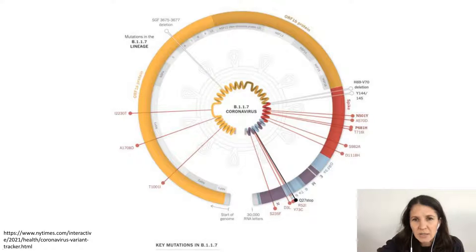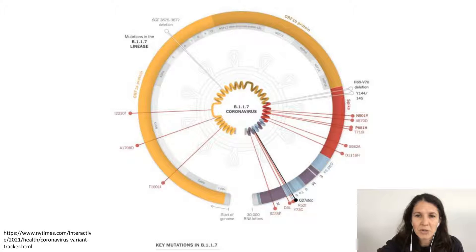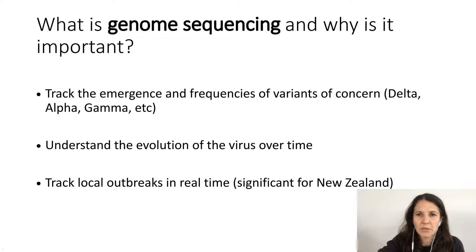There are also some deletions shown here as well. You can see that changes occur throughout the genome. Also not shown here, there are a large number of synonymous mutations — changes to the nucleotide sequence. So it is important to sequence the entire 30,000 nucleotides to really capture all of the changes that have happened to the virus over time.